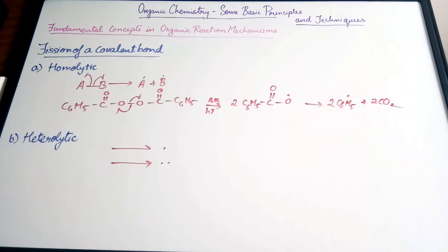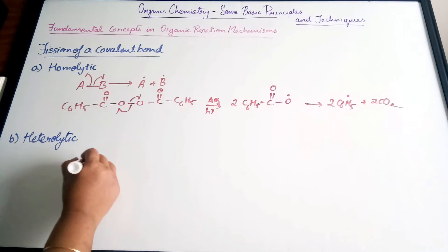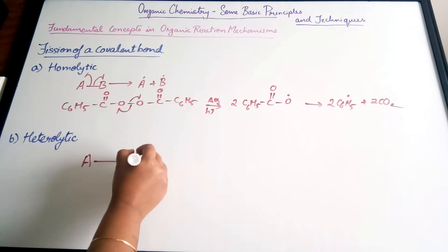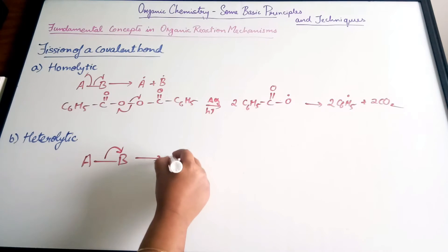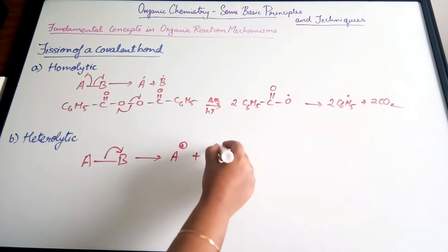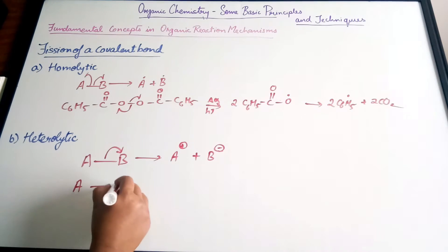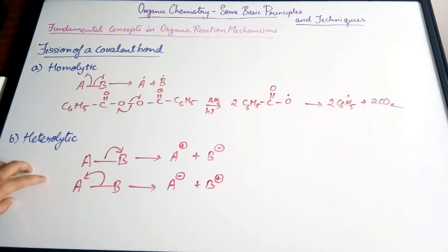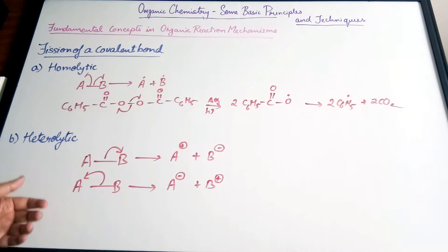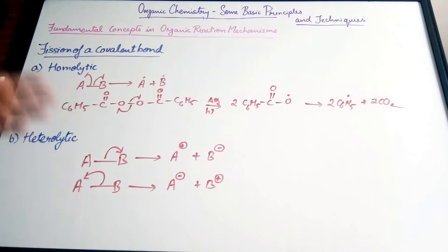Heterolytic fission, on the other hand, is unsymmetrical. Unlike homolytic fission where each atom got one electron, in heterolytic fission that's not the case. There are two cases: first, when B is more electronegative than A, B gets both the electrons, leading to the formation of A⁺ and B⁻. Similarly, if A is more electronegative than B, A gets both the electrons, forming A⁻ and B⁺.